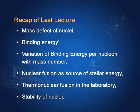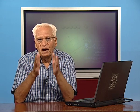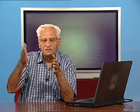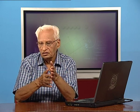In the last lecture, we learnt about mass defect, binding energy, and binding energy per nucleon. Mass defect is the difference between the mass of combined nucleons minus the actual observed mass of a nucleus. Mass defect multiplied by c² according to Einstein's formula gives us the binding energy, and dividing by the number of nucleons gives us the binding energy per nucleon. We plotted binding energy per nucleon against the mass number.